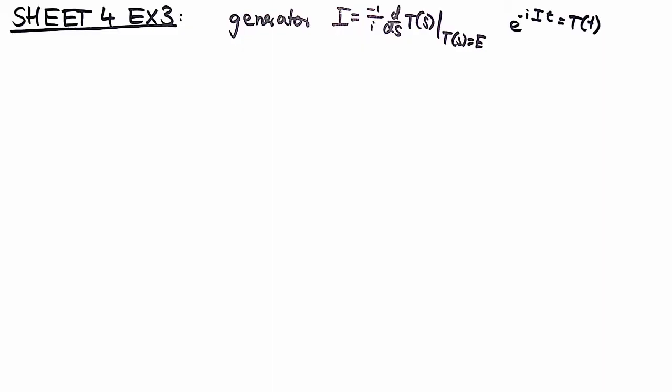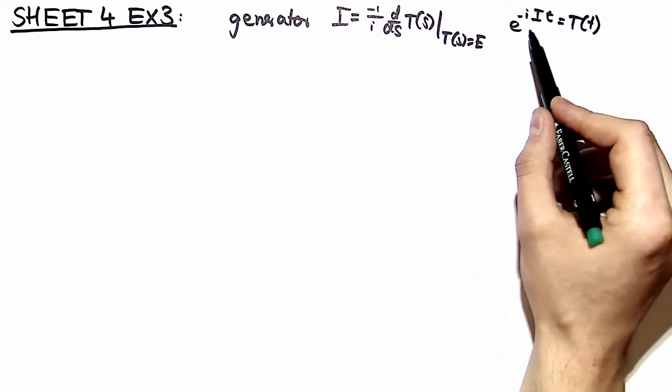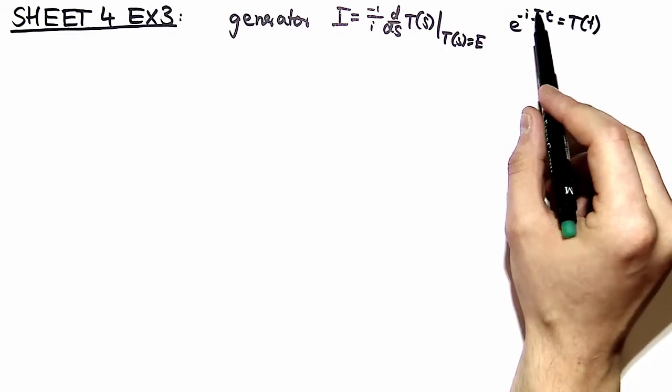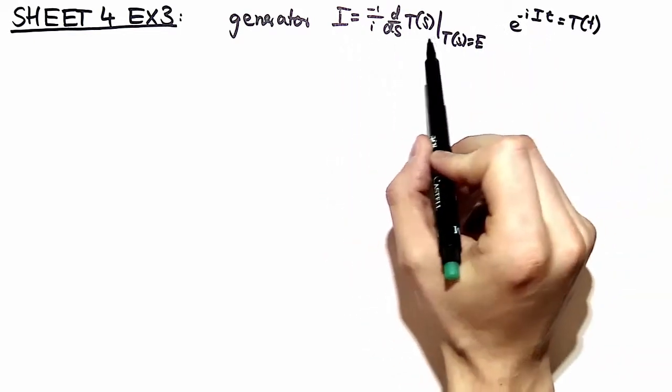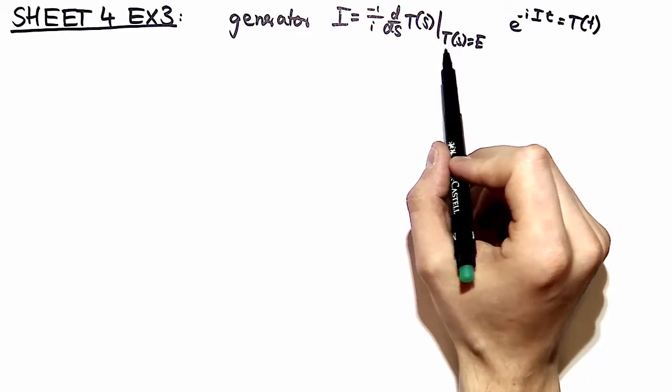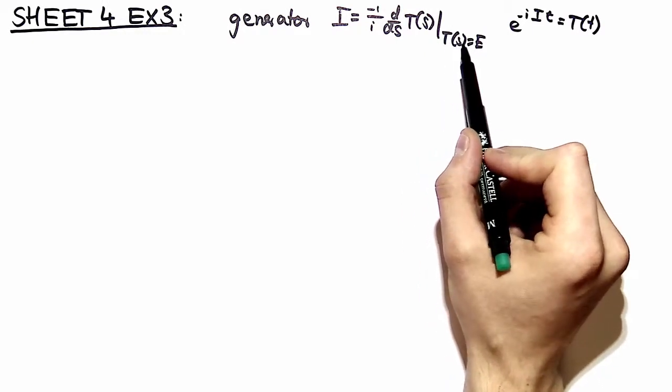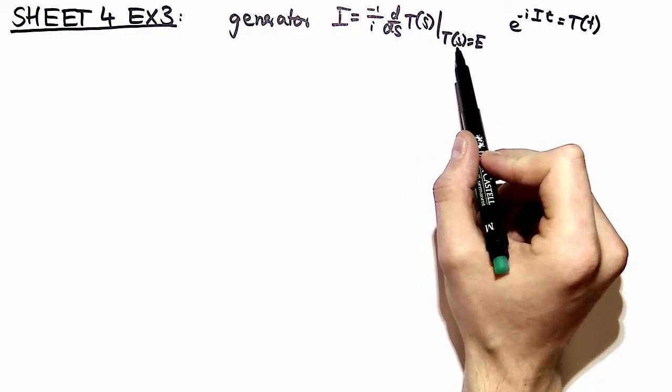Welcome back to exercise number 3 of problem set number 4. Here we're taking a closer look at generators. Generators make it possible to construct all elements of a representation via taking the exponential. i is here the generator and it's defined like this on page 80 of the script. We restrict it to all s which yield the identity element.